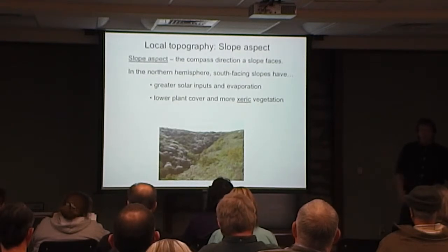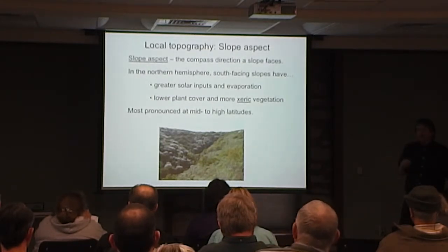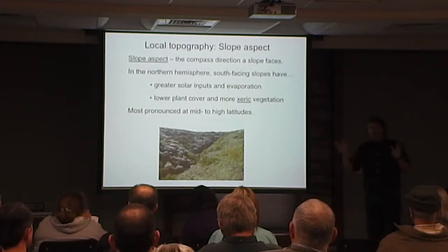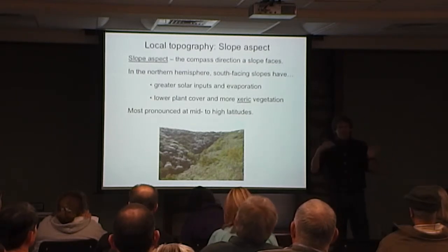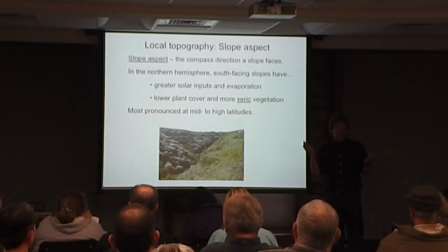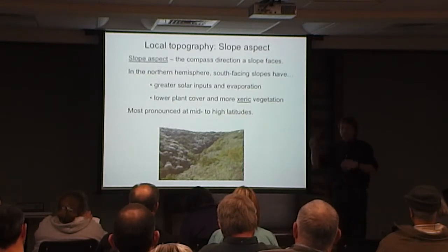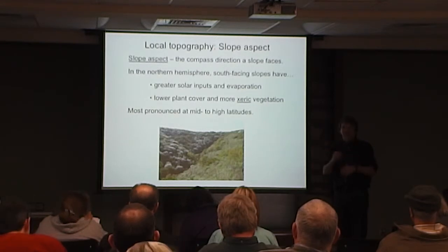That effect doesn't happen in the tropics, even when you have high mountains there, because over the course of a year the sun is pretty much evenly distributed north and south of a mountain range at the equator. So the further from the equator you are, the greater the effect. You can actually see a really strong effect of aspect in the tundra — even though you might not have strong hills, any sort of hill has a pretty large influence on the amount of heat energy coming in.